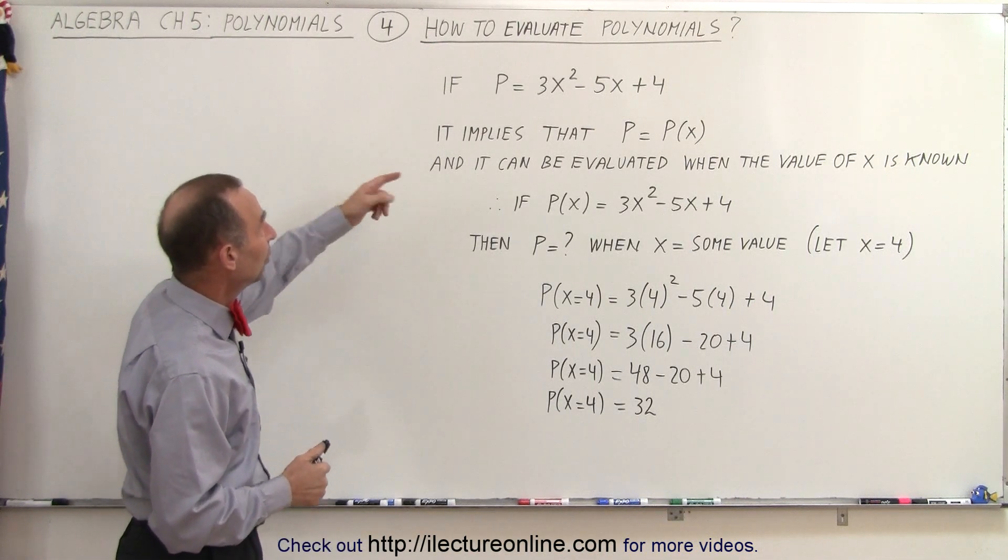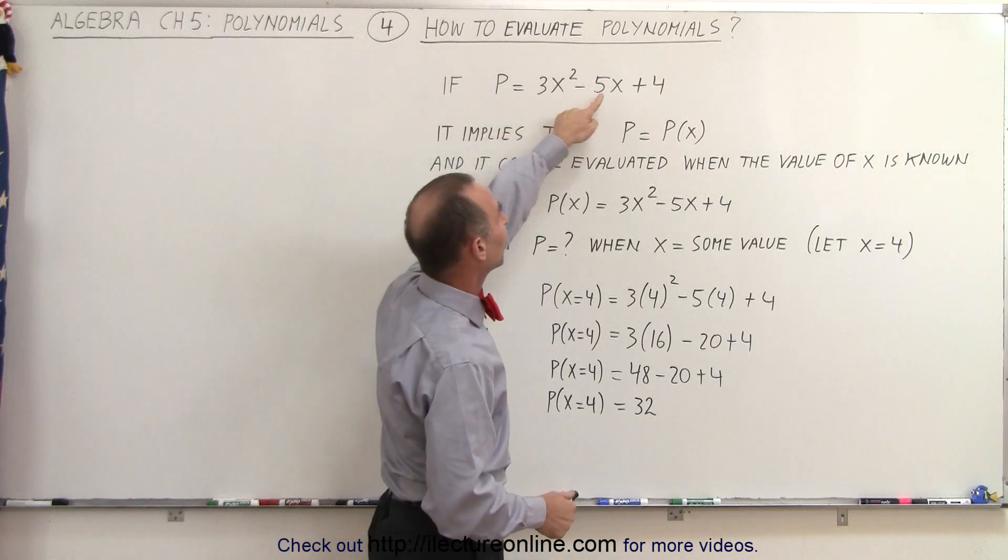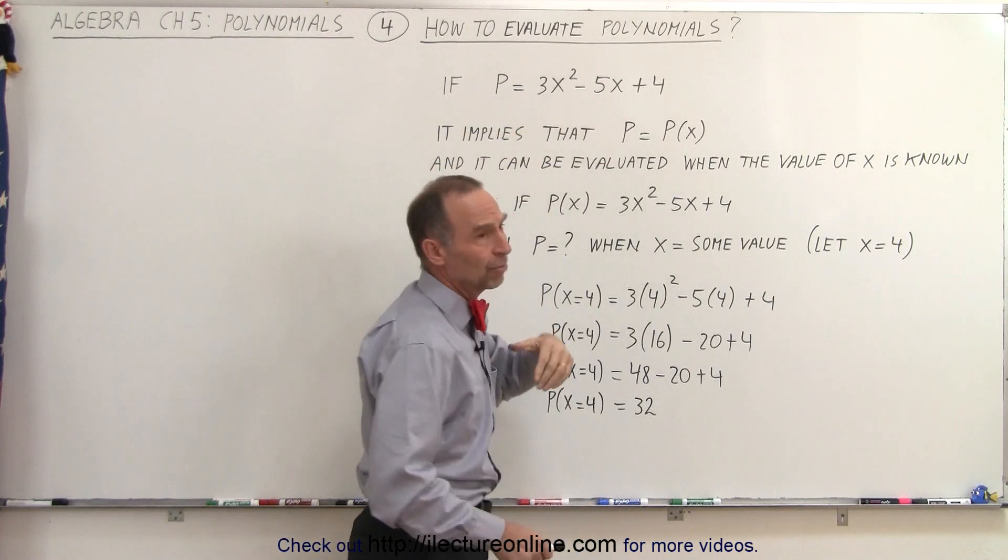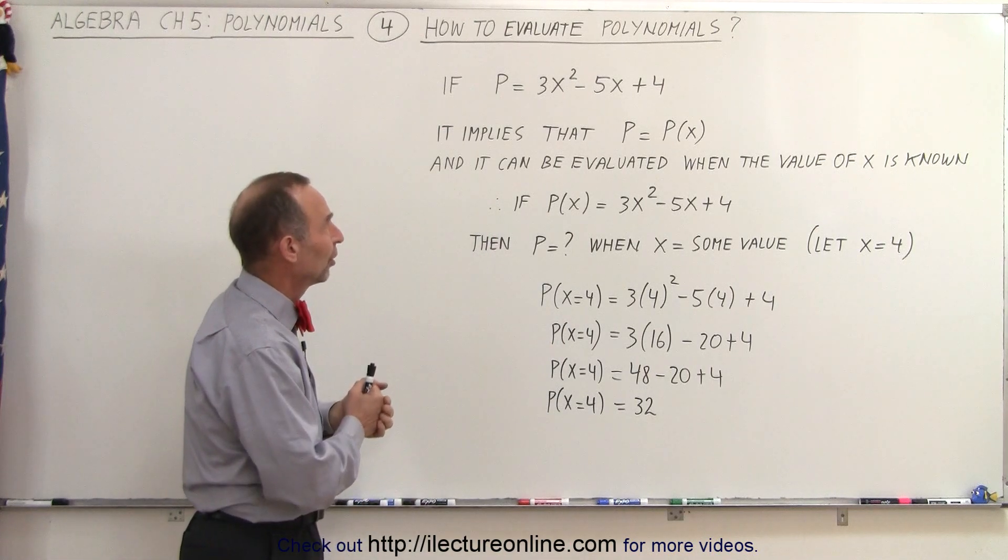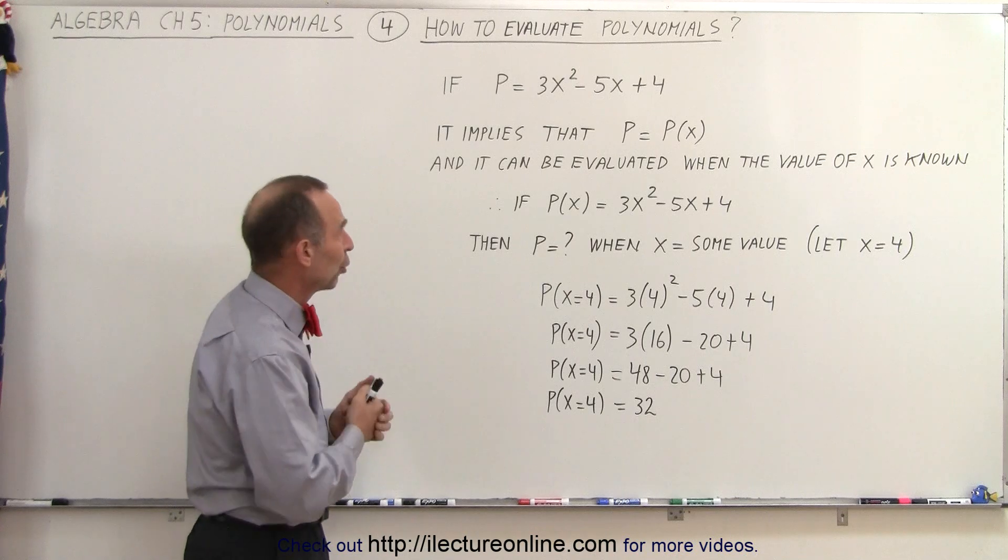Here we have an expression, 3x squared minus 5x plus 4, and we set it equal to p. So, p is a polynomial of three terms. The order of the polynomial is the second order polynomial,